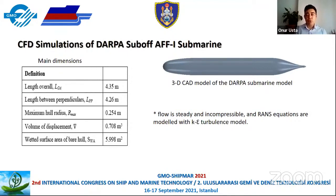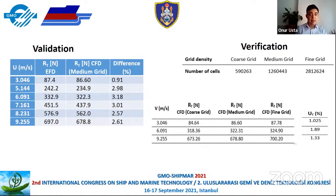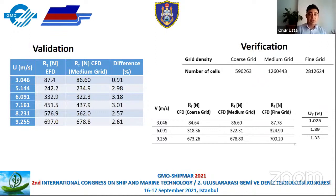The main dimensions and 3D CAD model of the DARPA submarine model are shown here. For validation, we carried out simulations in the velocity range of 3.46 to 9.255 m/s. You can see the experimental and numerical results in the table on the left-hand side. Our difference is between 0.91 and 3.18 percent, so we can say that we have achieved validation because our values are close to the experimental ones.